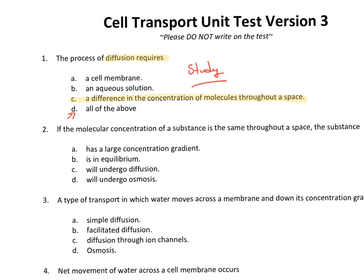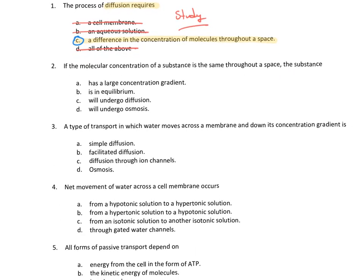You guys have to take a deep breath when you're taking a test. You have to look at the question and ask yourself, what are they asking me? It's not always more confusing or in-depth. Sometimes it's just very simple. Those are sometimes the hardest questions, because you have so many ideas and thoughts in your head and you have to organize them and choose the best answer. The answer is C — not all the above. You don't need a cell membrane and you don't need an aqueous solution. If there's a conceptual error here, we need to talk about it.